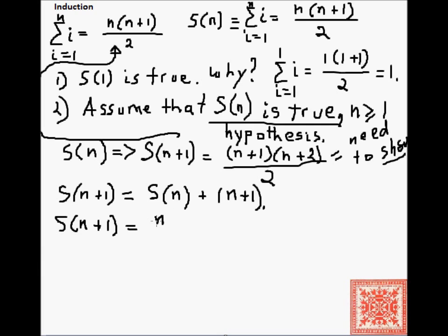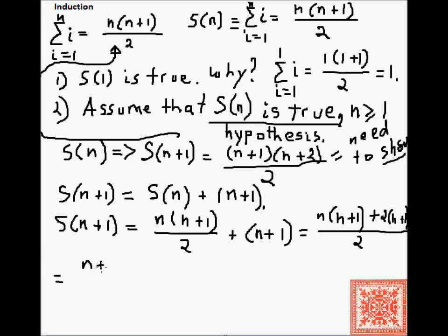n times n plus 1, this is our inductive hypothesis assumption, over 2, plus n plus 1. So we're very close. Let's do some algebra. We have n times n plus 1 over 2. n plus 2 and n plus 1 over 2. The common denominator is 2. And factoring n plus 1 out, we get n plus 1 times n plus 2.